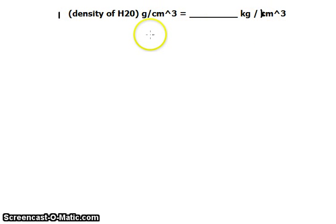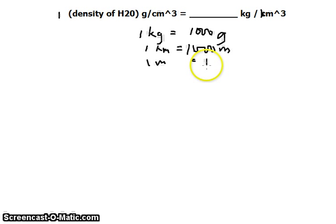From kilogram to gram, that's just very basic. We can use the linear measurements: 1 kilogram is 1000 grams, 1 kilometer is 1000 meters, and 1 meter is 100 centimeters.